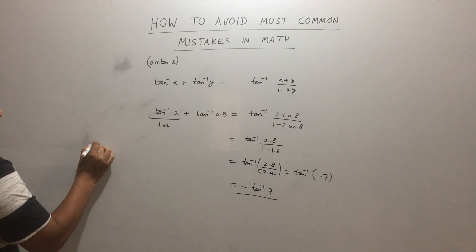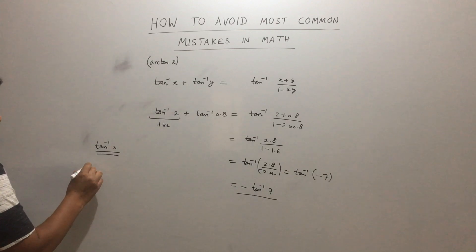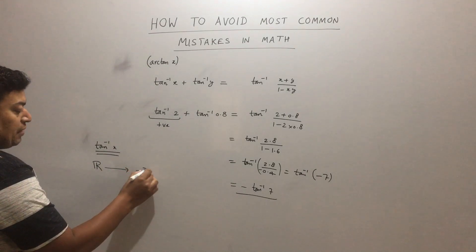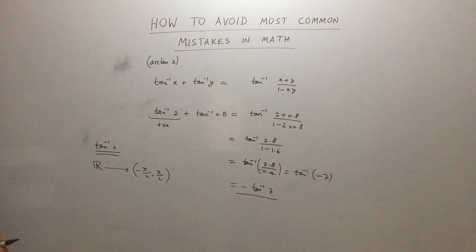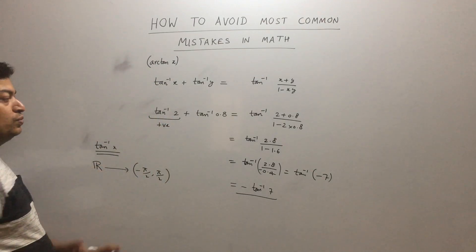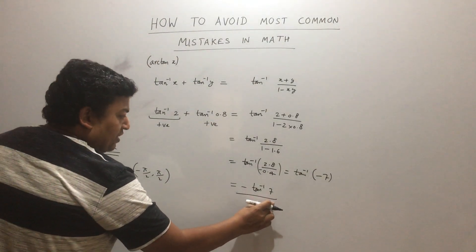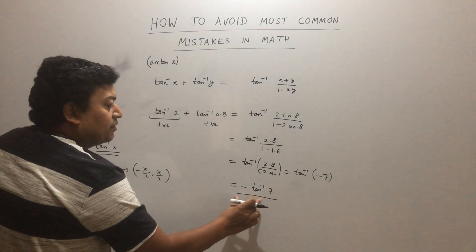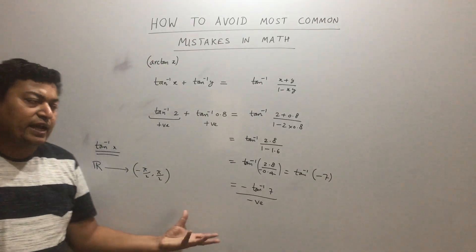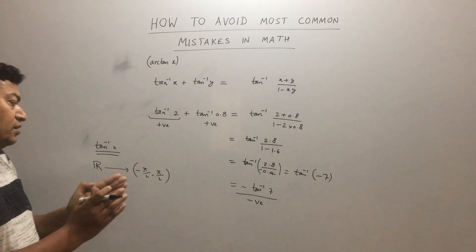tan⁻¹(2) will be a positive number no matter what. In case you do not know: tan⁻¹(x) has domain ℝ and range (-π/2, π/2). So tan⁻¹(2) will be somewhere between 0 and π/2, which is a positive number. Similarly, tan⁻¹(0.8) will also be a positive number. tan⁻¹(anything from 0 to ∞) will be from 0 to π/2.